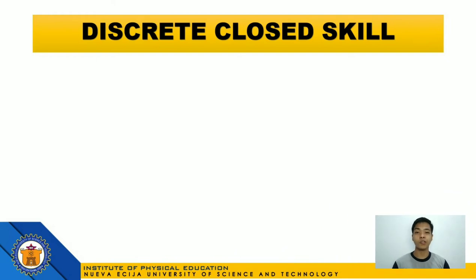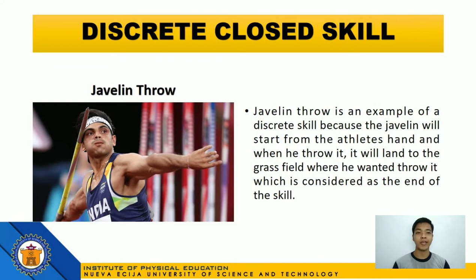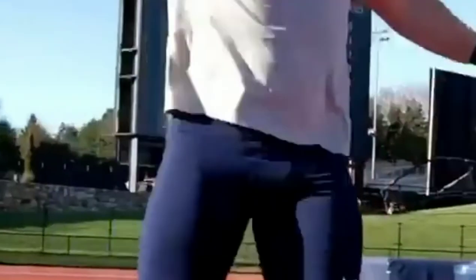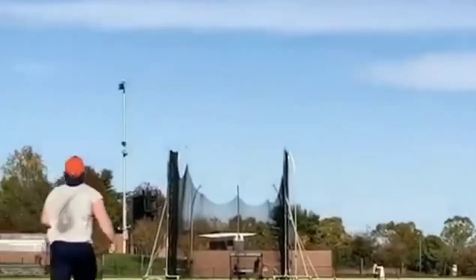Let's now have an example of a discrete closed skill, which is a javelin throw. Javelin throw is a discrete skill because the javelin starts from the athlete's hand and lands on the grass field, which is considered the end of the skill. It became a discrete closed skill because your very purpose is just to throw the javelin where you want it to go. You have more control since there is no opponent to deal with, and adaptability is not necessary.